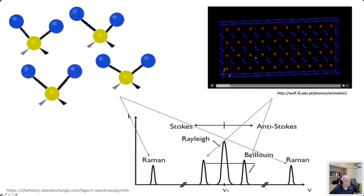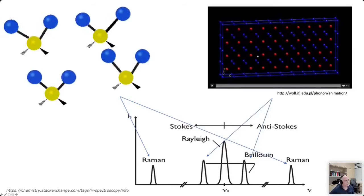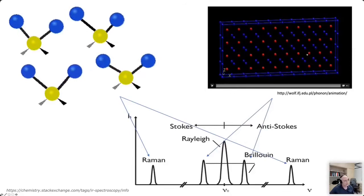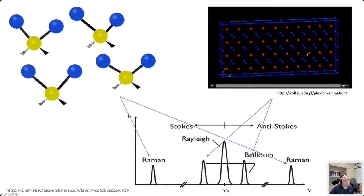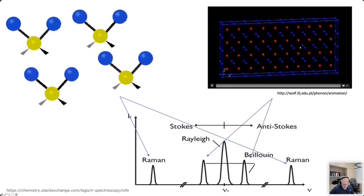What Brillouin does is get light scattered from vibrations of the material called acoustic phonons. What we are measuring with Brillouin — the location and height of these peaks — is actually the velocity, or normally just the speed, of these acoustic phonons present in the material. So Raman gives chemical composition while Brillouin gives acoustic phonon speed, which also means you can in certain circumstances work out elastic properties of the material.